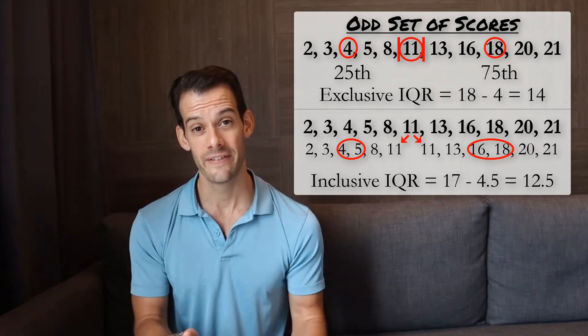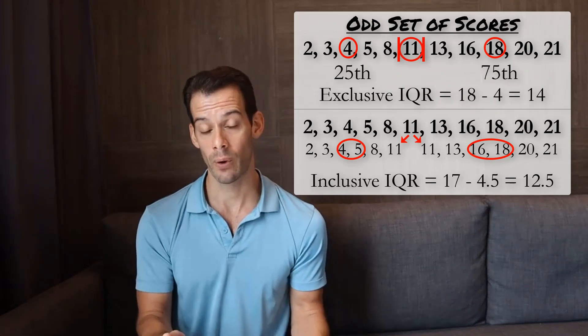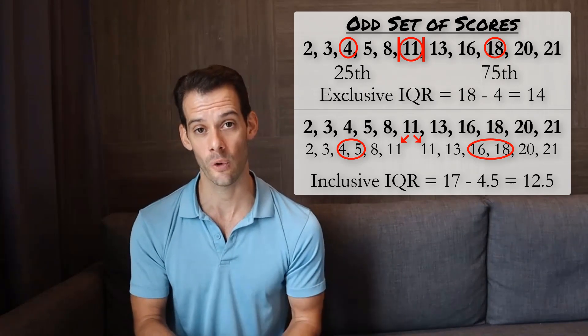Now depending on our data, this distinction between an inclusive and exclusive interquartile range might be trivial. Or we might find if we have repeated scores around those points that it actually doesn't change the interquartile range at all.